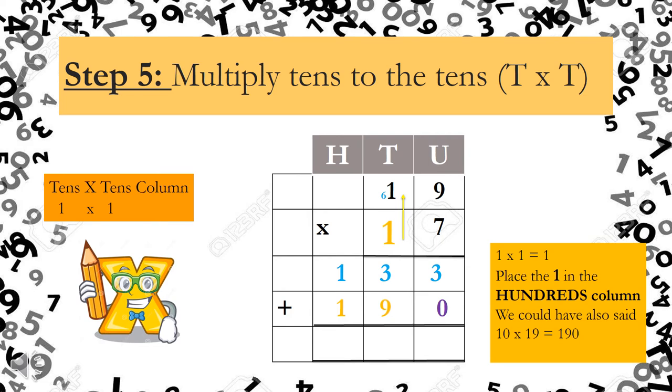Step 5. Multiply tens to the tens. I've completed 1 times 9, which was 10 times my units. Now I move on to say 1 times 1. Remember, I'm dealing with my tens columns. So in other words, it should have been 10 times 10. But because I place my zero down, I can now say 1 times 1. Boys and girls, 1 times 1 equals 1. Where would I place that 1? In the hundreds column. Because we could have also said 10 times 10 equals 100. That is why it goes in the hundreds column. If I also looked at this and said 10 times 19, it would have given me 190. As you can see.